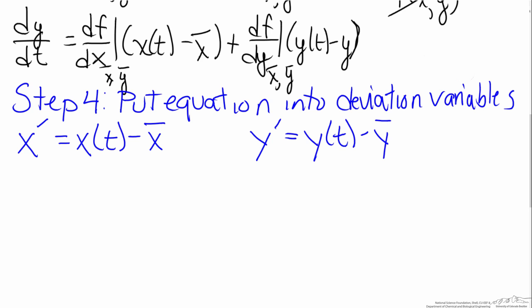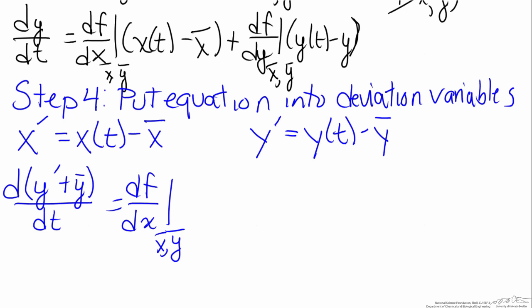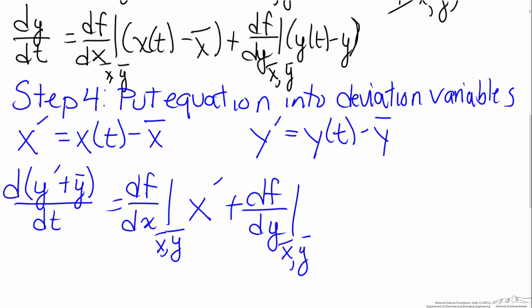If we substitute this into our differential equation, the left hand side becomes d(y-prime + y-bar)/dt, equals df/dx evaluated at the steady states. The next term is the explicit definition of a deviation variable, so we can replace that with x-prime. We see a similar thing with the final term: df/dy evaluated at the steady states, multiplied by y-prime. Since y-bar is a constant, its derivative with respect to t is zero, so the dy-bar/dt term drops out.